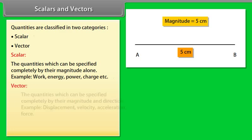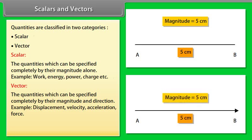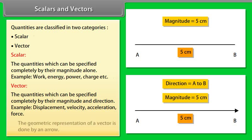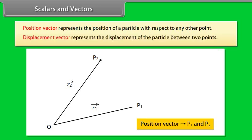Vector: the quantities which can be specified completely by their magnitude and direction. For example, displacement, velocity, acceleration, force. The geometric representation of a vector is done by an arrow. Position vector represents the position of a particle with respect to any other point. Displacement vector represents the displacement of the particle between two points.